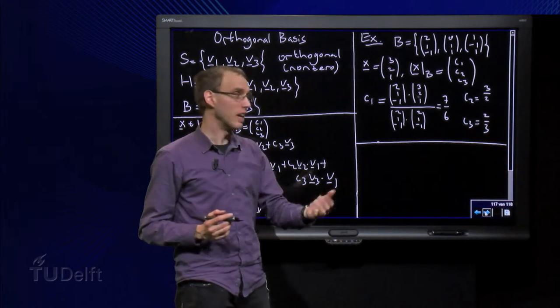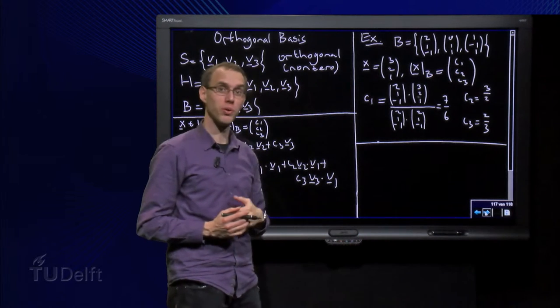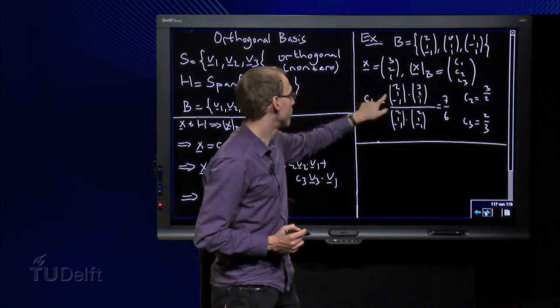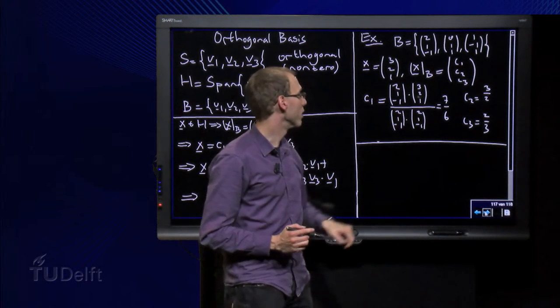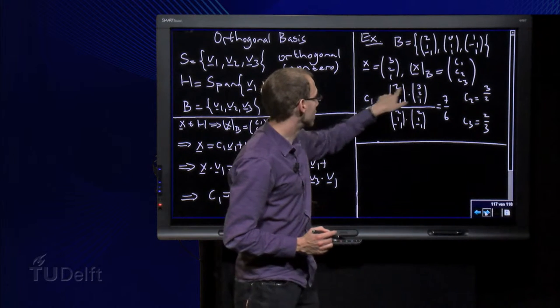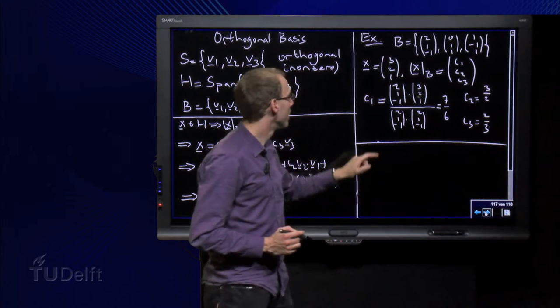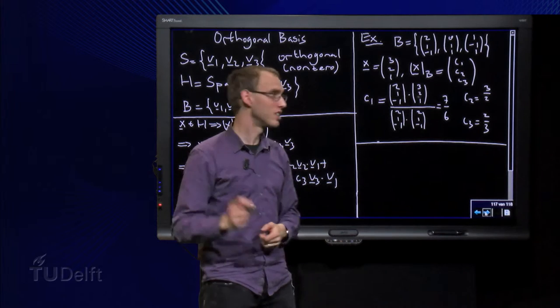Then we want to compute xb, so the weights c1, c2 and c3. C1 equals x in v1 over here divided by v1 in v1 over here. So we have 6 plus 2 equals 8 minus 1 equals 7. And here we have 4 plus 1 plus 1 equals 6. So c1 equals 7 over 6.